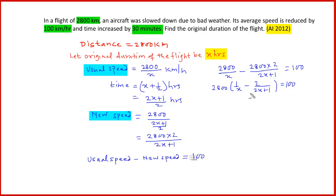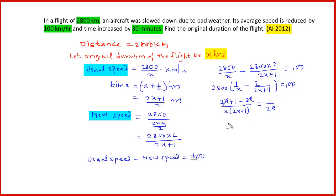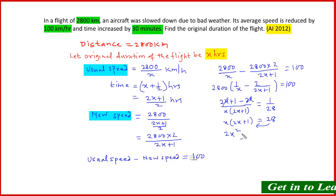Now solving the bracket by taking LCM of x(2x + 1): multiplying gives (2x + 1) minus 2x over x(2x + 1) = 1/28. The 2x terms cancel, and taking the reciprocal of both sides gives x(2x + 1) = 28. Expanding: 2x² + x minus 28 = 0.